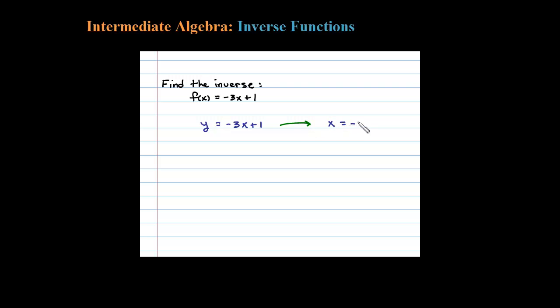Here we would have X equals negative 3y plus 1. That Y right there is going to be the inverse, so let's go ahead and solve for that. First, subtracting 1, X minus 1 equals negative 3y.